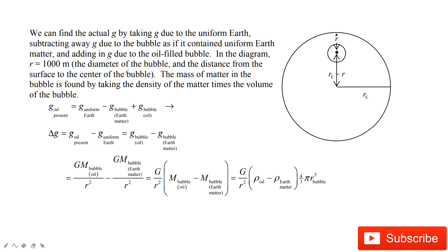So this is a little bit tricky. So how can we decide this g is actually g? So we need to take it due to the uniform earth, and then subtracting away g due to the bubble, as if it is contained uniform earth of matter.